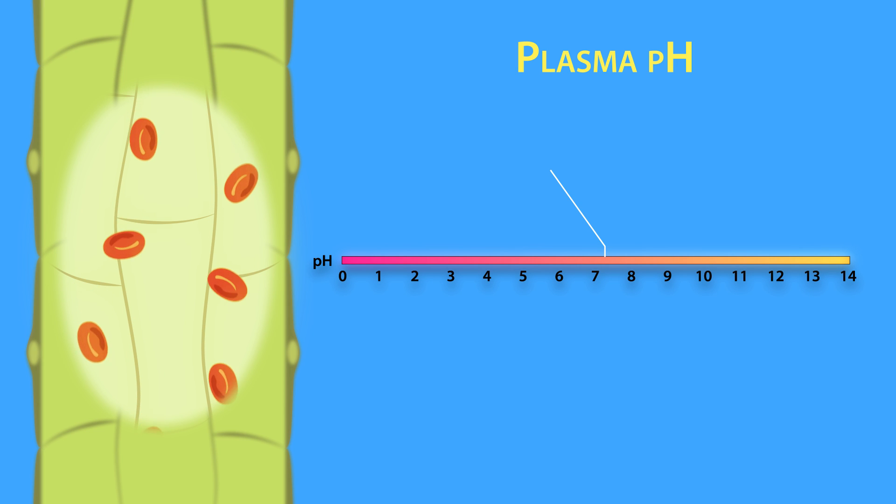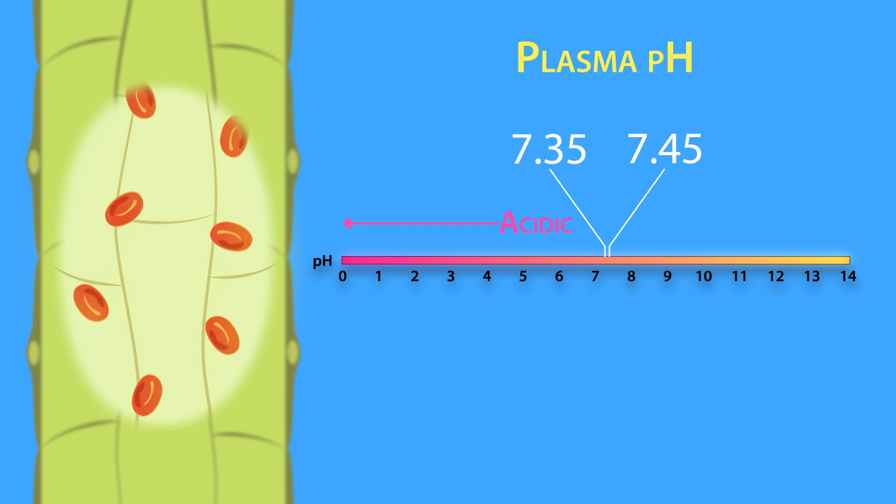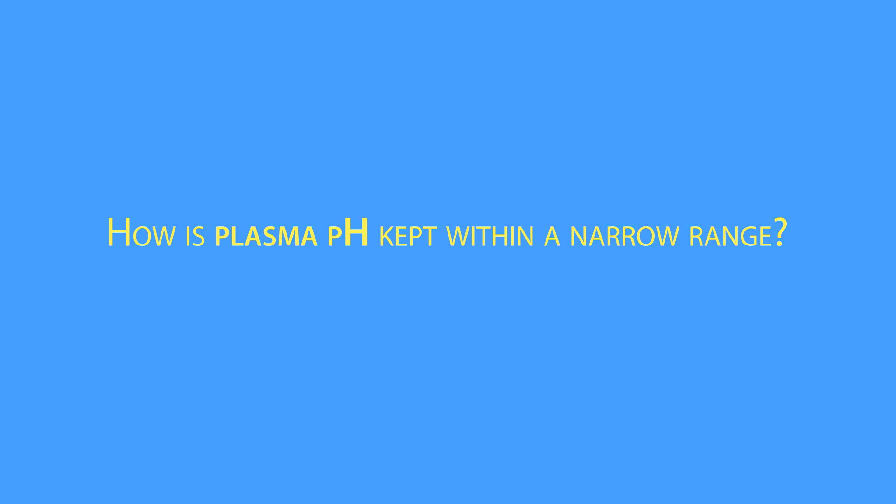The plasma pH is held between 7.35 and 7.45. When it's less than 7.35, it's considered acidic. If it's greater than 7.45, it's considered basic. So how is it kept within this narrow range?